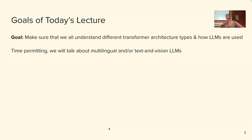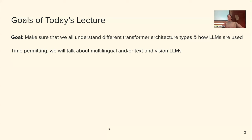My original plan was to tell you how we can extend these models to handle many languages — like 100 languages, not just English — or how ChatGPT handles images. However, I feel like some things are not really clear to you right now. So I changed the plan and want to go over a few things I deem are still confusing. Please ask me questions and interrupt me anytime.